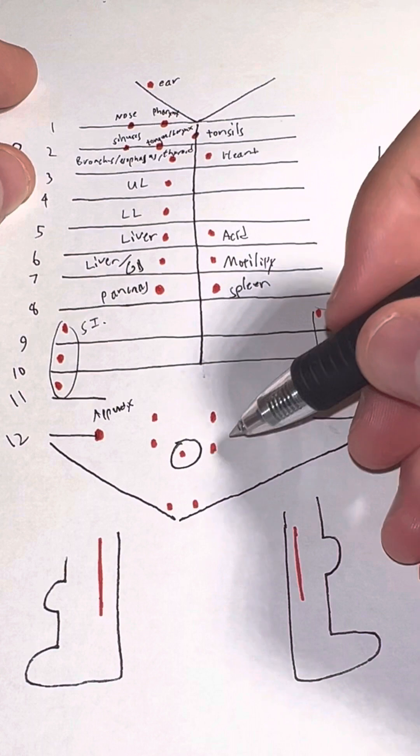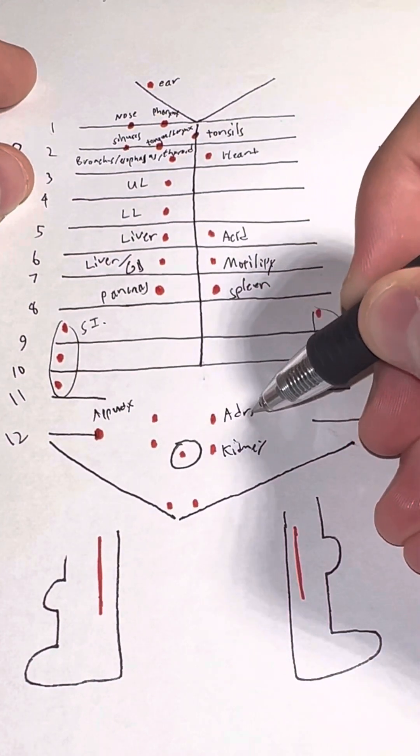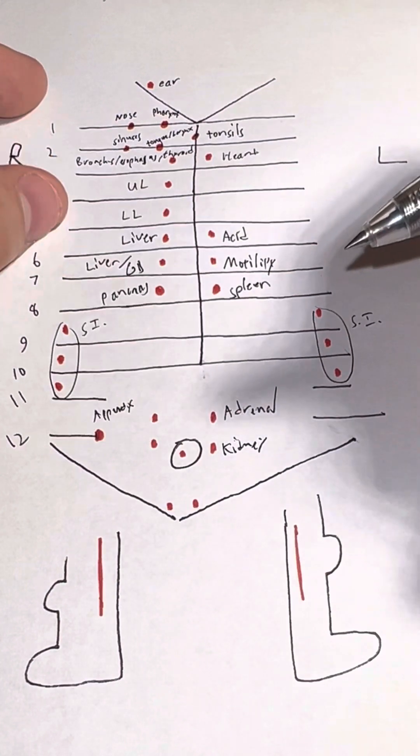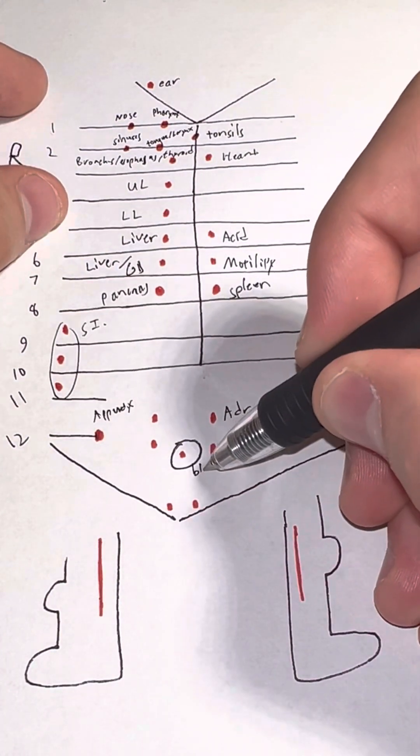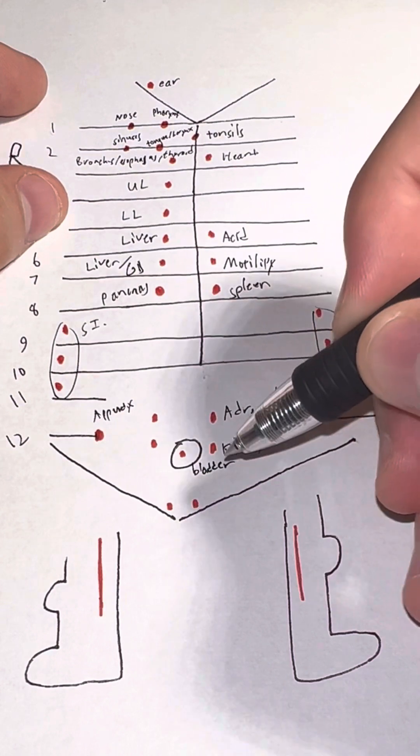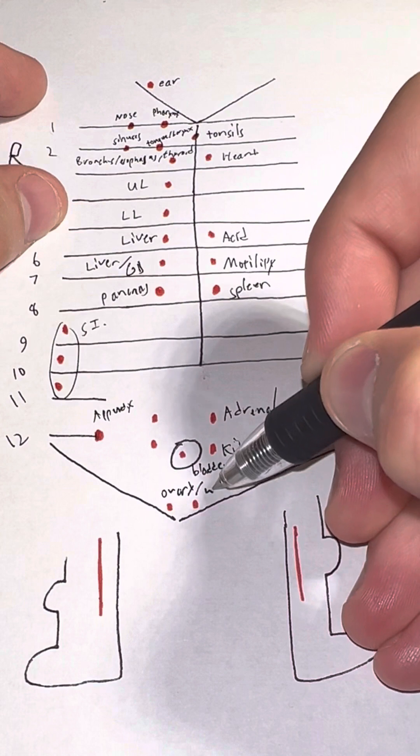Now here we can kind of think anatomically, but it's going to be kidney, adrenal, because the adrenals sit right on top of the kidney. Bladder, right here. And then in the pelvis, this is going to be ovary slash urethra.